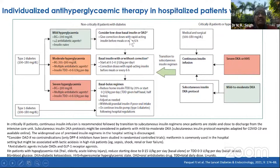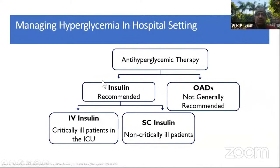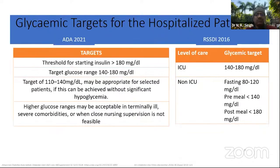This is how non-critically ill patients are treated and how critically ill patients are managed when hospitalized. The regimes are: consider low-dose basal insulin or oral anti-diabetic drugs when mild, meaning blood glucose less than 200. If moderate — that is 201 to 300, per Lancet Diabetes and Endocrinology — use basal insulin with or without correction. If severe, then definitely go for basal bolus — there is no choice. Anti-hyperglycemic insulin is recommended; critically ill go for IV, non-critically ill can go for subcutaneous insulin.